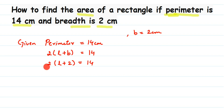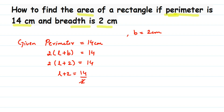Since it's 2 into the whole bracket, I need to remove the 2 first. When you transpose the 2 to the other side it comes in division, so L plus 2 is equal to 14 divided by 2, which gives 7. So L plus 2 is equal to 7. Now transpose 2 to the other side — since 2 is addition, it becomes subtraction — so L is equal to 7 minus 2, which is equal to 5.